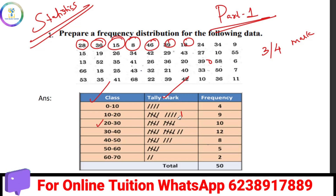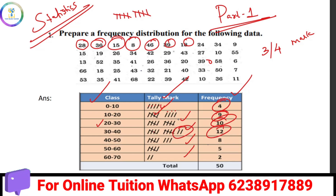If you want to mark every single observation, you will know how they mark one. The number is 4, then 5, then 6, then 8, up to 10. The tally mark represents the frequency. Counting the tally marks: 1, 2, 3, 4, 5, 6, 7, 8, 9, 10, 12. Let's take a look at the tally mark frequency here.